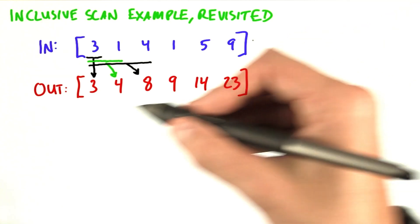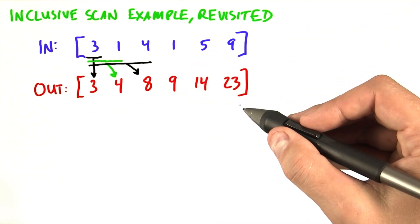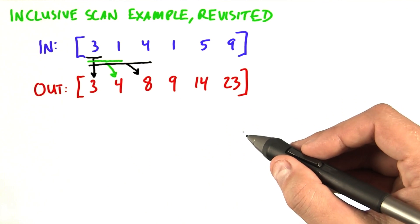To compute all n outputs, we simply run n separate reductions, and then we can run all n of these reductions in parallel.